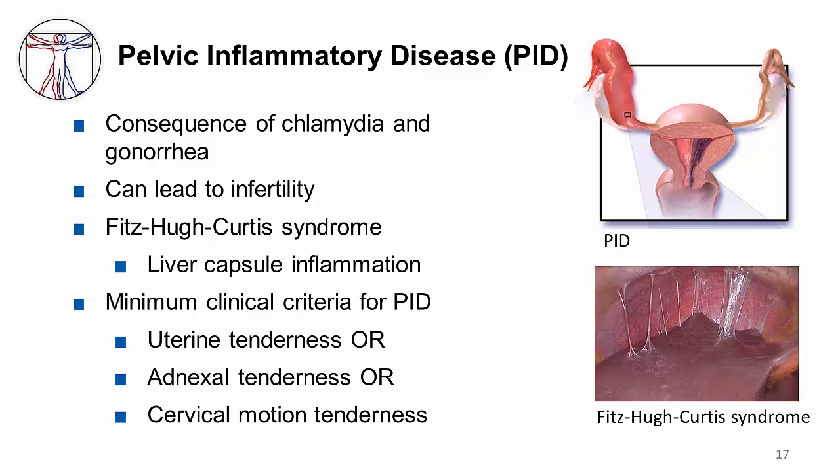The minimum clinical criteria for pelvic inflammatory disease are uterine tenderness, adnexal tenderness, or cervical motion tenderness. Note that the criteria are intentionally nonspecific given the risk of missing PID. We typically hospitalize if a surgical emergency cannot be excluded, if there is evidence of a tubo-ovarian abscess, pregnancy, or if there is severe illness involving nausea, vomiting, or high fevers.